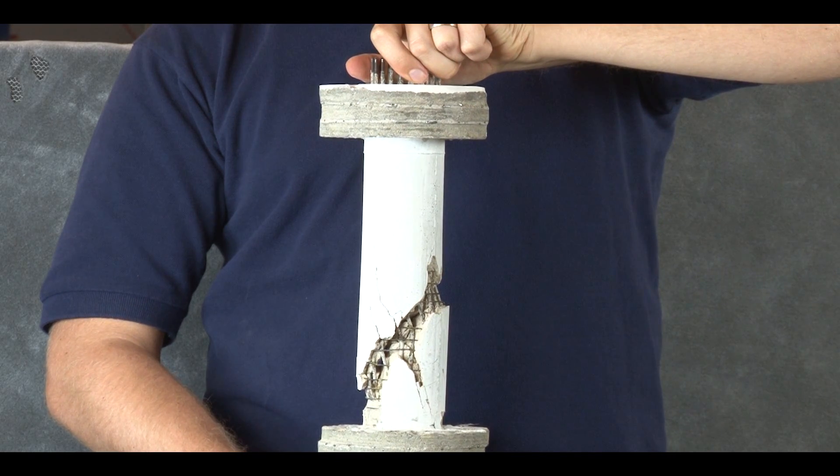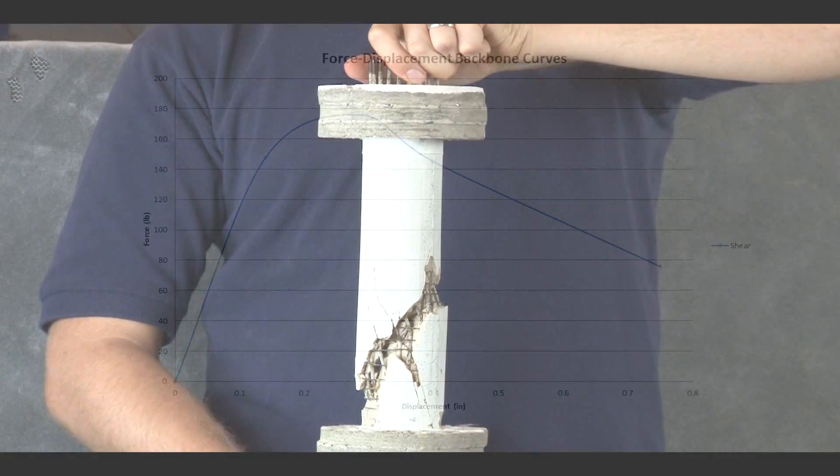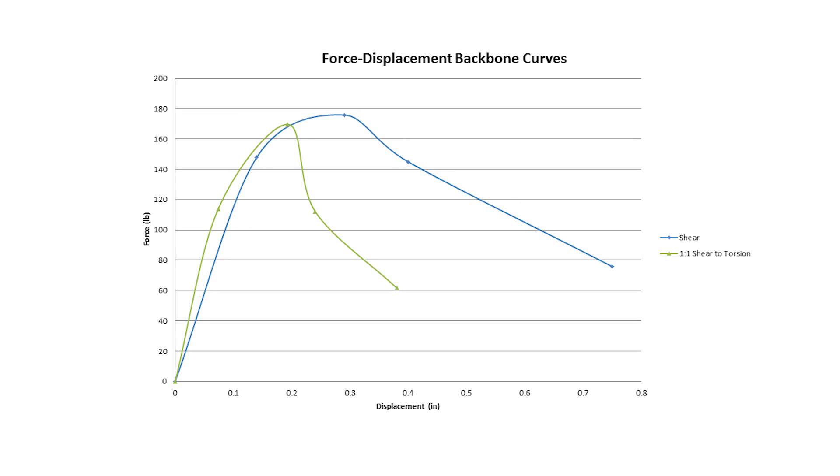This indicates that the shear behavior dominates over the torsional shear in this loading case. This is further supported by the observation that this level of additional torsion did not significantly reduce the lateral shear capacity of the specimen.